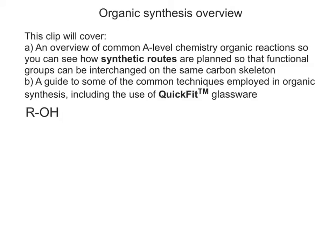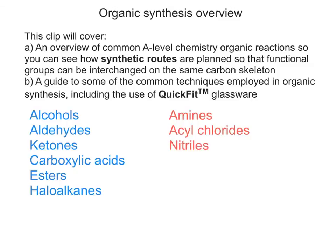I'm going to list some of the common functional groups you'd come across in A-level. The functional groups shown in blue are ones you may have come across in your A1 year, and the ones in red are ones from your A2 year. So depending on what stage you're at when watching this video, blue is A1 and red is A2.